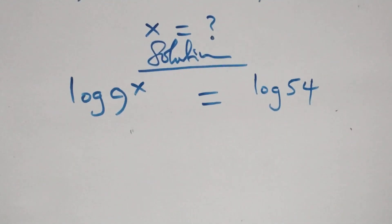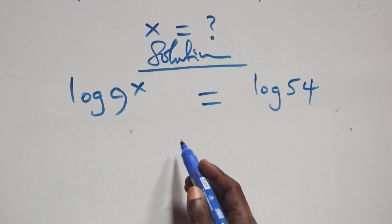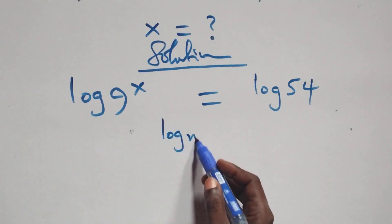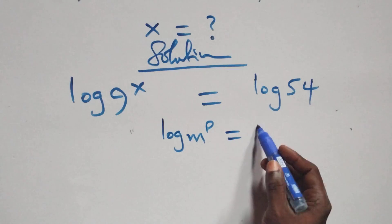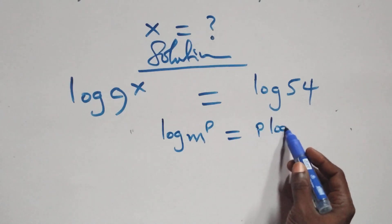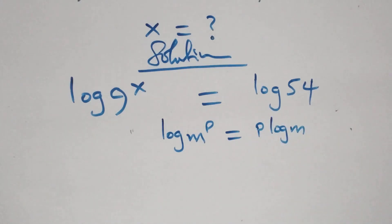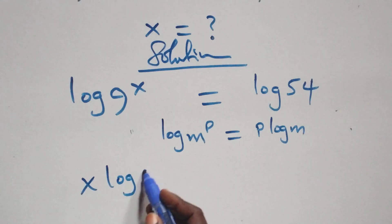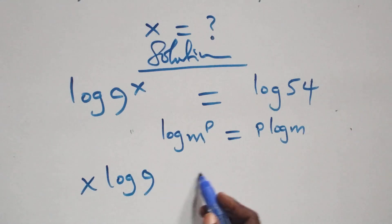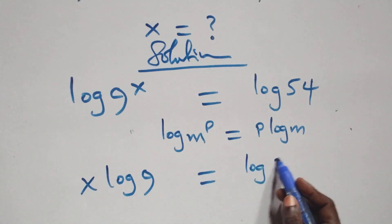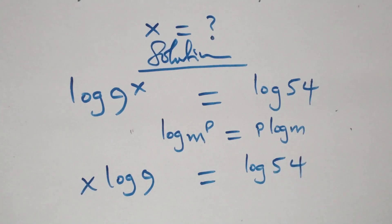Then, next step here, we apply the rule of logarithms: when we have log m raised to power p, this is the same thing as p log m. So everything here becomes x log 9 equals to log 54 on this side.